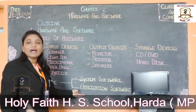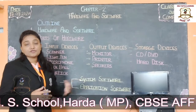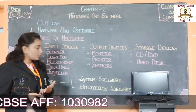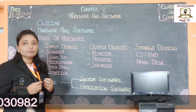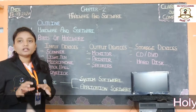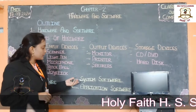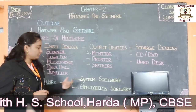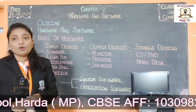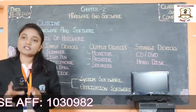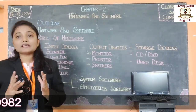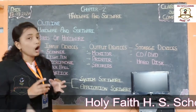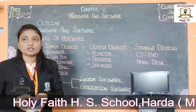System software is a set of programs that controls the overall working of a computer. An operating system is an example of system software that manages all input and output operations.